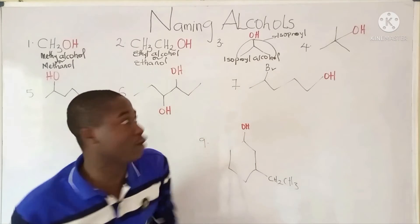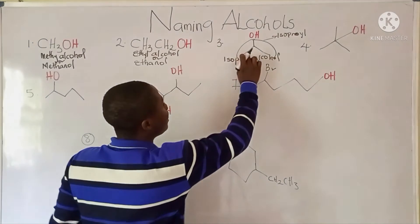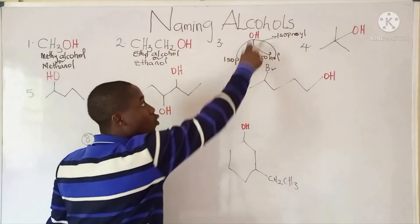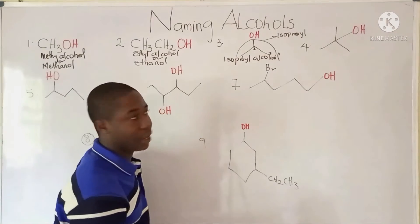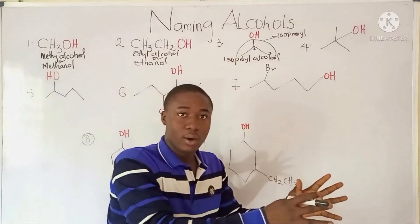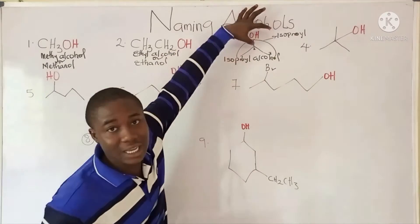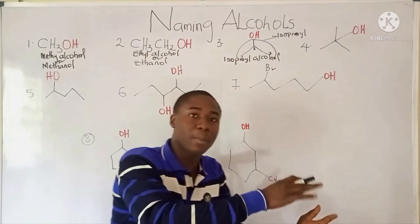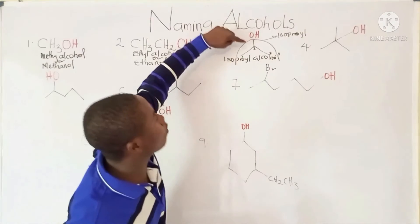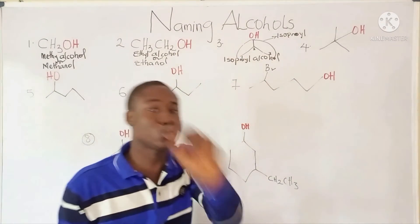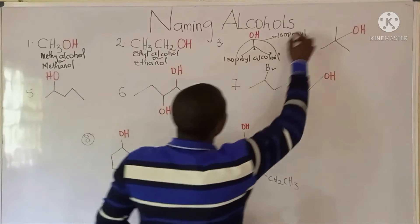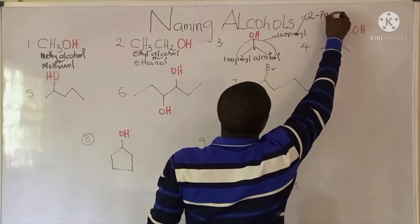Now, naming it using IUPAC, we start numbering. Here it becomes carbon 1, 2, and 3. At carbon 2, we have an OH group. A 3-carbon chain is called propane, but since there is an alcohol group attached to carbon 2, the propane changes to propanol. To be specific, at carbon 2, it is called 2-propanol. So the IUPAC name of this compound becomes 2-propanol.